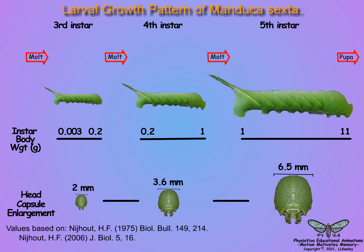The sclerotized head capsule enlarges only at the start of each molt and stays at that fixed size until the next molt. Larval insects monitor the head capsule width, and when it reaches a specified size at the start of the instar, the larva initiates metamorphosis at the next molt.